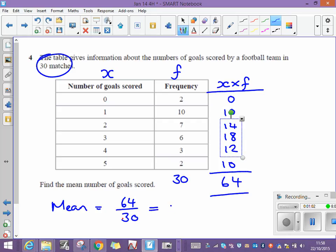And that comes out as two point one, three, three, and so on. Round it to something sensible. Good idea to round it to three significant figures. I know you can't have two point one three goals, but we're talking about an average here. That's fine.